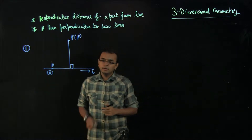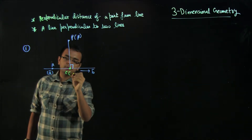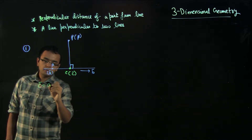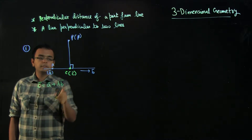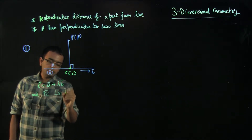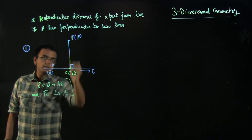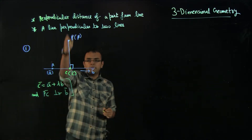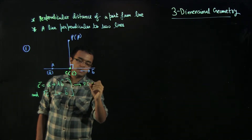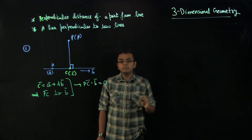How will we solve this? One approach is to think that there is a foot of perpendicular point C (vector C) on the line. We know C vector equals A vector plus lambda B vector, since C is on the line. Also, the vector PC is perpendicular to B vector. These are the two conditions: PC perpendicular to the parallel vector, since PC is the perpendicular to the line. So the perpendicularity condition gives us PC dot B equals 0. Knowledge of vectors is super critical in this chapter.